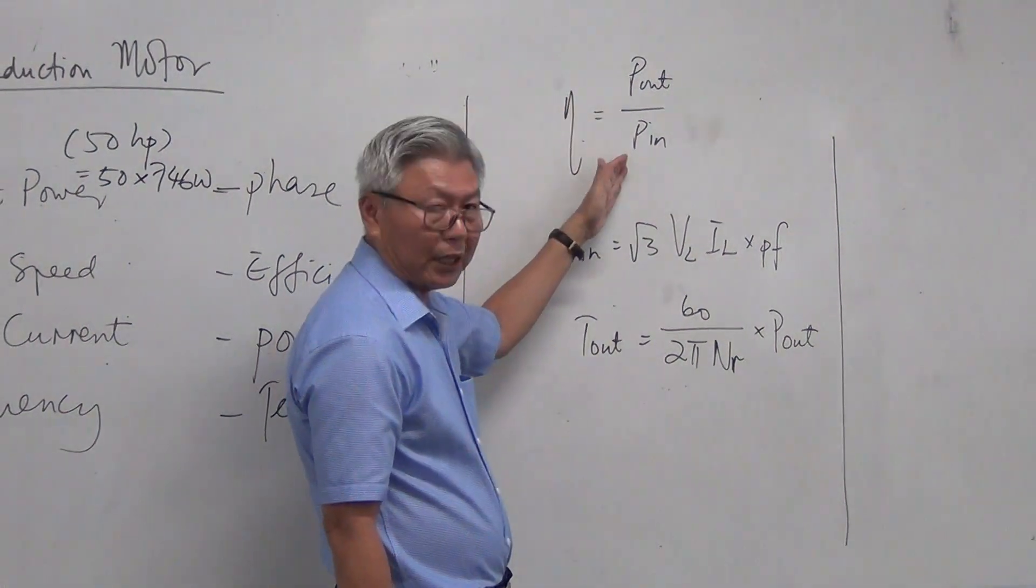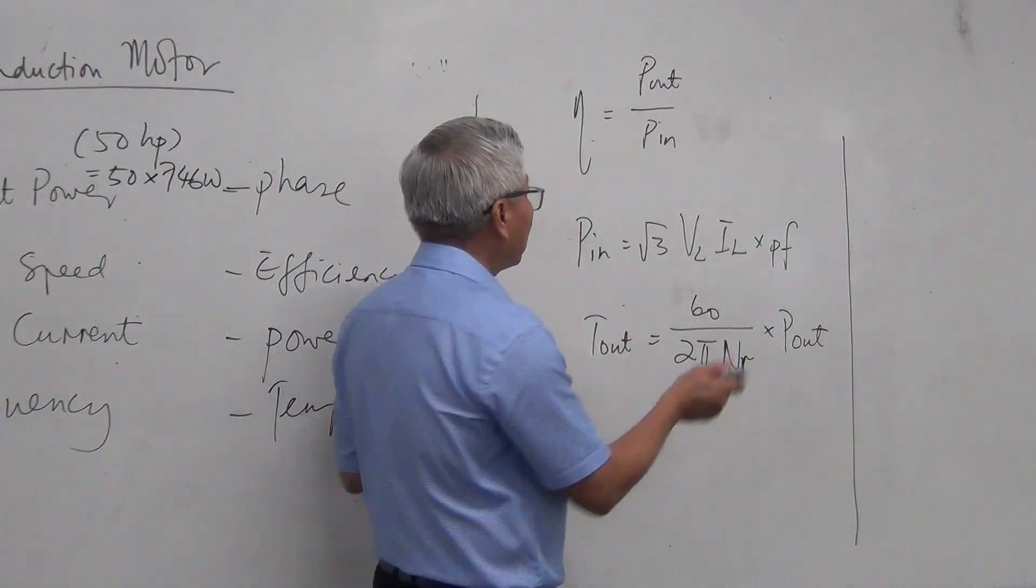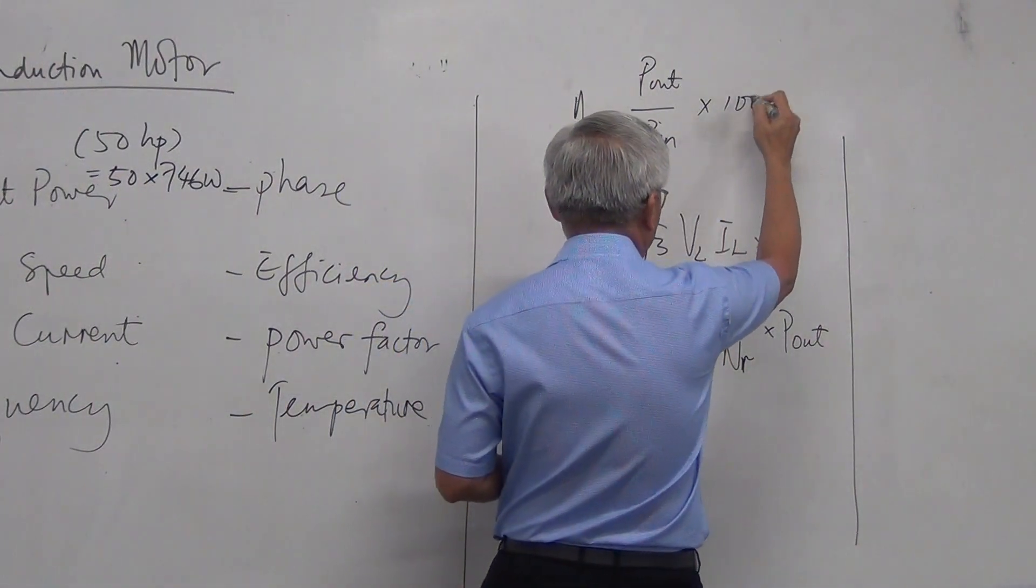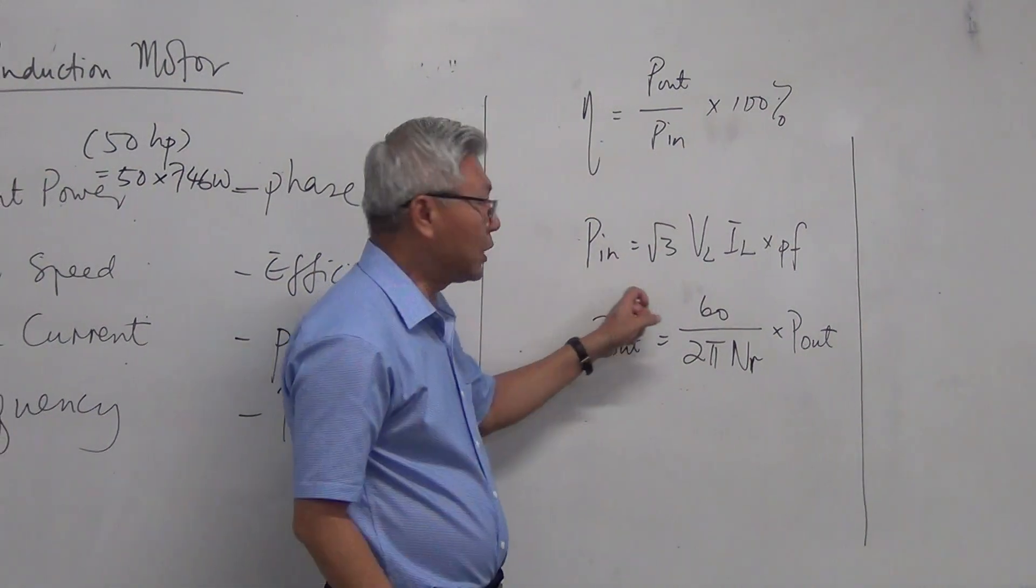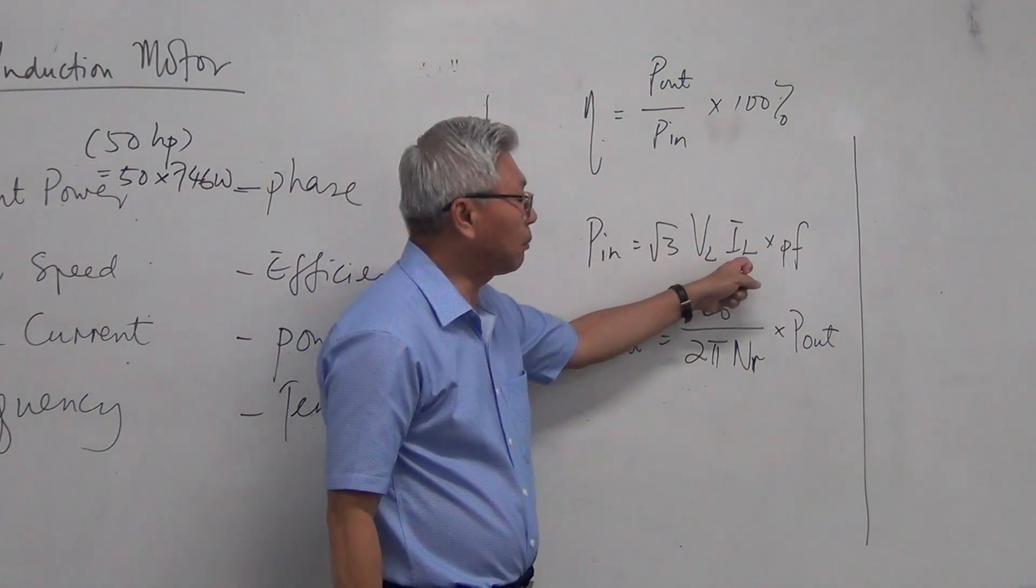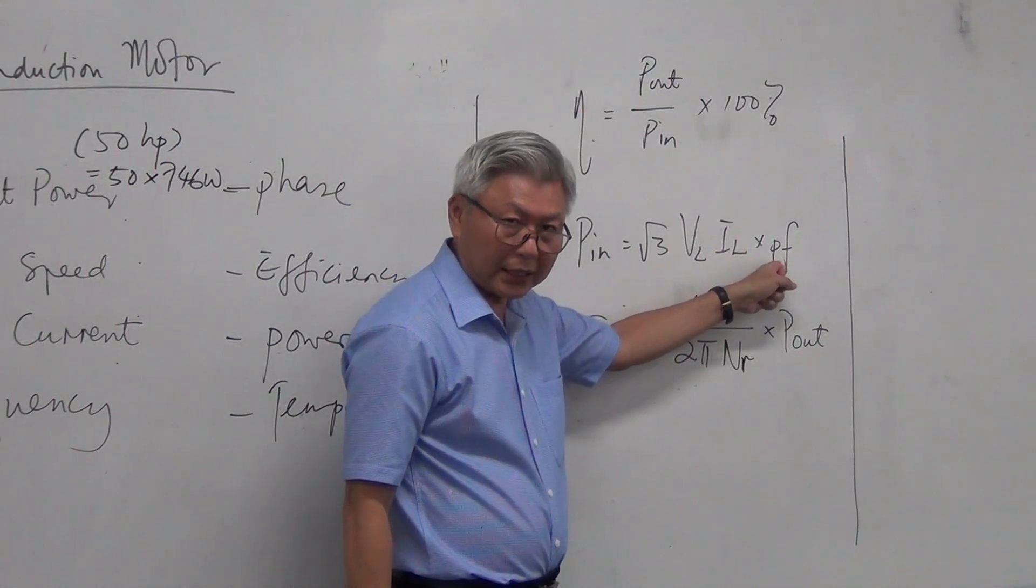we must familiarize ourselves with three simple formulas. Efficiency is equal to output divided by input power. If you make the percentage, you multiply by 100%. And in three-phase theory, input power, three-phase power is square root 3 times line voltage, multiply line current, cosine theta, the power factor.